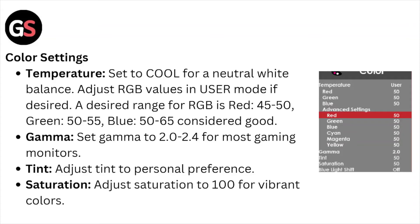Color settings — Temperature: set to cool for a neutral white balance. Adjust RGB values in user mode if desired. A desired range for the RGB is red 45 to 50, green 50 to 55, blue 50 to 65, which is considered good.